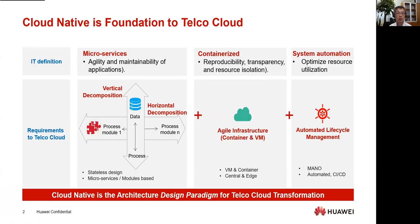In IT, CloudNative is clearly defined as microservice plus container support with some system automation. For all these three parts, some of them have already been supported in the technical cloud. Here I'm talking about a 4G EPC-based core network. Before that, the technical system was purpose-built hardware with embedded monolithic software. This kind of architecture is to support carrier-grade high-performance and high-reliability.